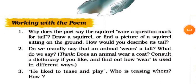His tail is curved at the end and so looks like a sign of interrogation. Second question: Do we usually say that an animal wears a tail? What do we say? Think — does an animal wear a coat? Consult a dictionary and find out how 'wear' is used in different ways. Answer: No, we usually say that an animal has a tail. The dictionary meaning of 'wear' suggests to have something on your body as a piece of clothing.